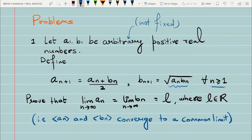Then your task is to prove that the sequence An and the sequence Bn converge to some real number L, where this L is a common limit. That is, they both converge to some common limit. This is your task for this problem.